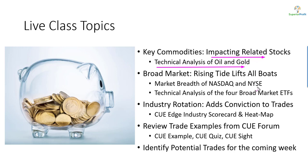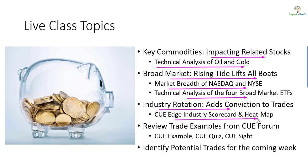In today's topics we will analyze oil and gold — these two commodities — using technical charts, as they tend to impact related stocks. When swing trading, we like to align trades in the direction of the overall market. We will study market trend using NASDAQ and NYSE market breadth and technical analysis of broad market ETFs. In addition, we will align trades with industry strength using scorecard and heat map, and review recent ideas from the Q Traders Forum for potential trades in the coming week.